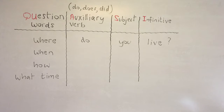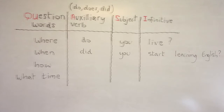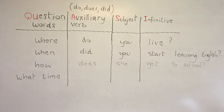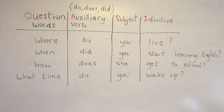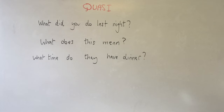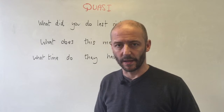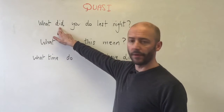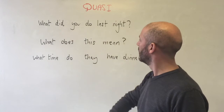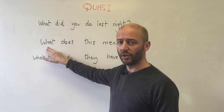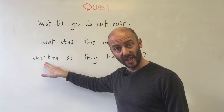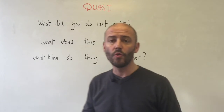For example: where do you live, when did you start learning English, how does she get to school, what time do you wake up. These are all examples of the QUASI pattern: question word, auxiliary verb, subject, infinitive — used with do, does, and did in the present and past simple.